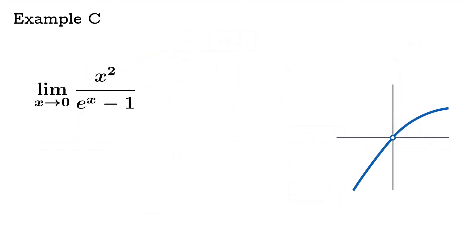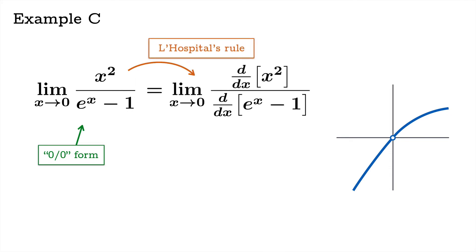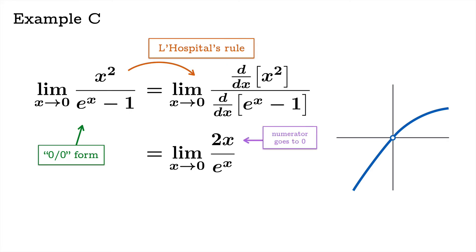In the third example, x squared over e to the x minus one, the limit as x approaches zero is a zero over zero form. L'Hôpital's rule gives us the new limit 2x over e to the x. As x approaches zero, the numerator goes to zero while the denominator goes to one. So the classic limit law kicks in, and that limiting value is zero — once again in agreement with what we saw earlier.